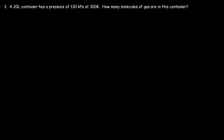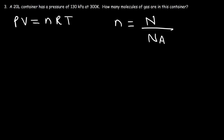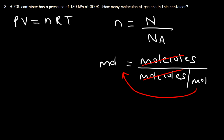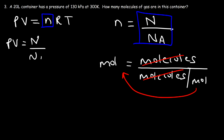Now let's move on to problem three. A 20-liter container has a pressure of 130 kilopascals at 300 Kelvin. How many molecules of gas are in this container? We need a different form of the ideal gas law. The number of moles N equals the number of molecules divided by Avogadro's number NA, where 1 mole has 6 × 10²³ molecules. So we replace N with (number of molecules)/NA in PV = NRT.